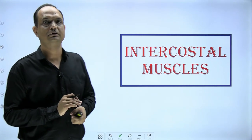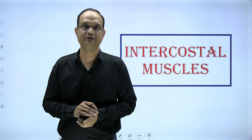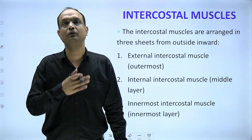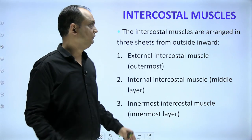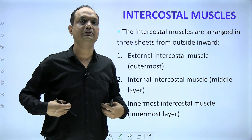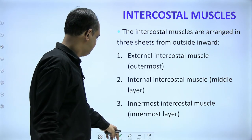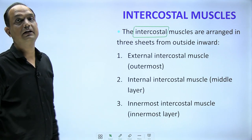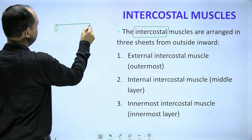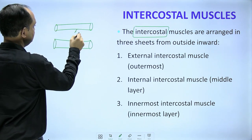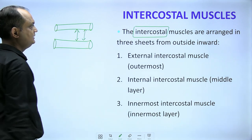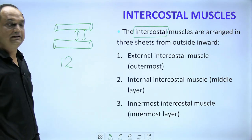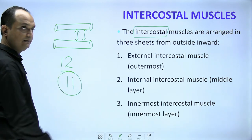Today we will discuss the muscles present in the intercostal spaces. Under the heading 'intercostal muscles,' there are three muscles. When you go from outside to inside — removing the skin and deep fascia — you encounter the muscles present in the intercostal spaces, which are the spaces between adjacent ribs. On one side you have 12 ribs, so on one side you have 11 spaces.